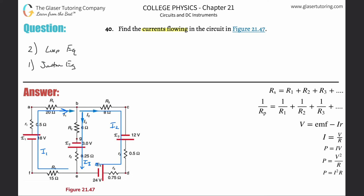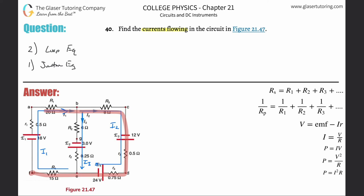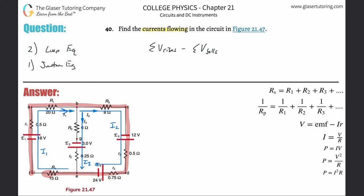Let's pick a starting point and come back to it. We'll start at point F and analyze this loop in a clockwise direction. You could have chosen to go the opposite way — all the numbers work out in the end. The loop rule says the sum of all potential rises minus the sum of all potential drops equals zero.